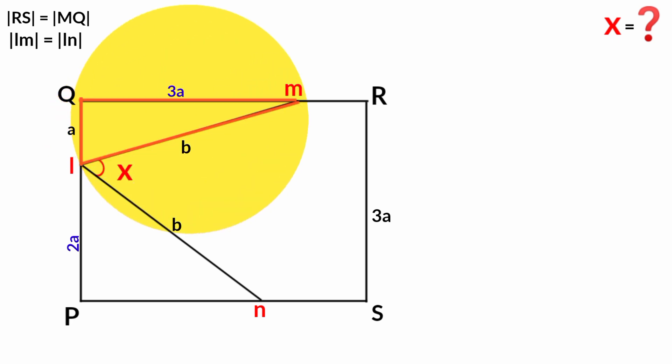Now from triangle LMQ, we can use SOH CAH TOA to find the size of this angle. Taking it as theta, this is the opposite, this is the adjacent, and this is the hypotenuse. Using this, tan theta equals opposite over adjacent. Opposite is 3a and adjacent is a, so tan theta equals 3a over a. Here a cancels a, now tan theta equals 3.